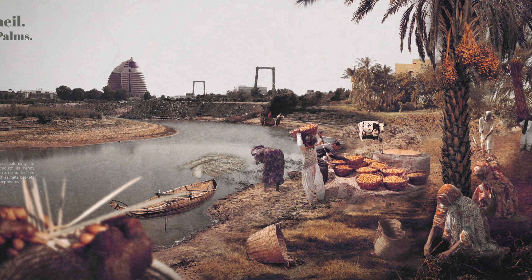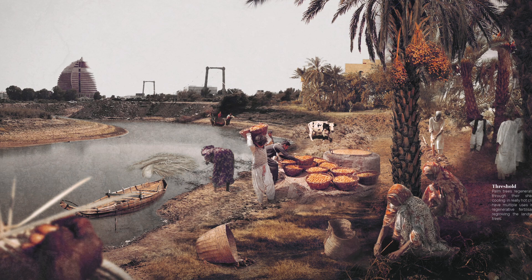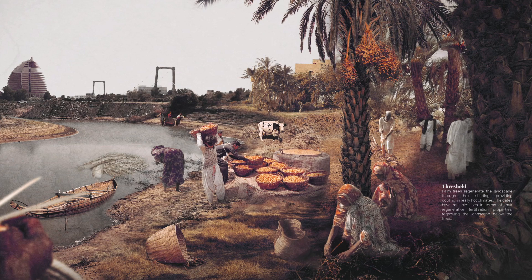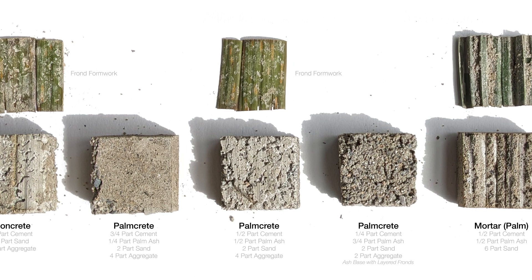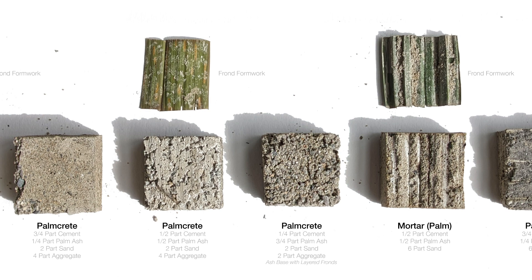The riverine date palms provide a range of regenerative properties both in terms of food, health, and as pollution absorbents. Both palm and date pit ash can be used in construction — palm ash is typically used in concrete and date pit ash in bricks due to their faster degradability. Any water flowing through the bricks is cleaned through the embedded ash. Similarly, the reduced usage of cement and concrete reduces the embodied carbon in constructing new buildings on the island.